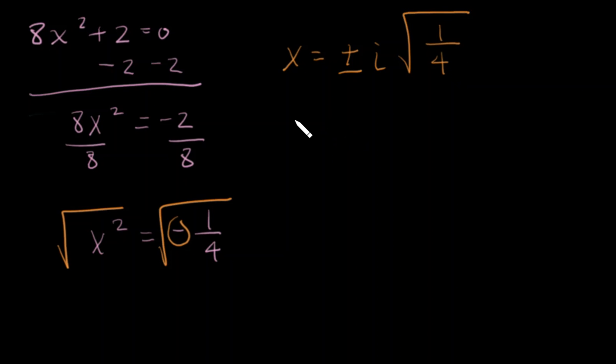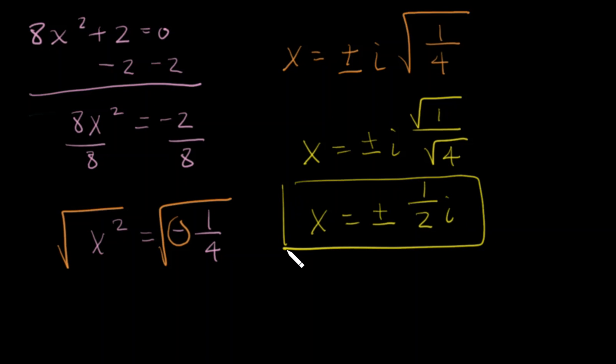We can further simplify this. X equals plus or minus i. We're square rooting this - we square root the numerator and we square root the denominator. And x equals plus or minus one half i. That's our final answer.